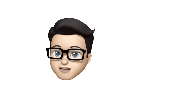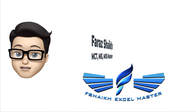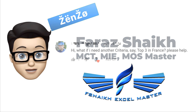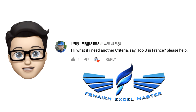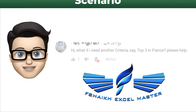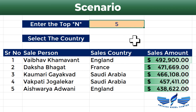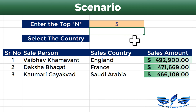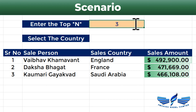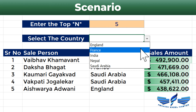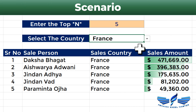Hi, welcome back to another video on Excel Master. In today's Excel video we are going to solve a query which has been asked by one of our subscribers — a really interesting question. We have seen in our previous video how we can get the top N values by simply entering the value we need, but what if we have a filter criteria, for example France?